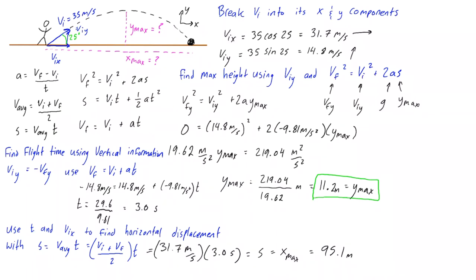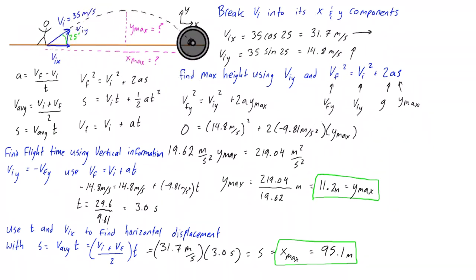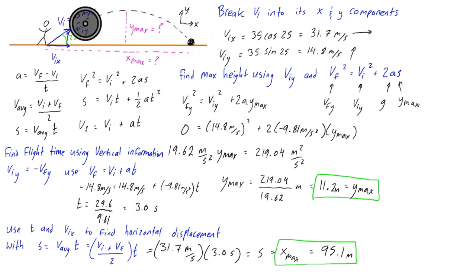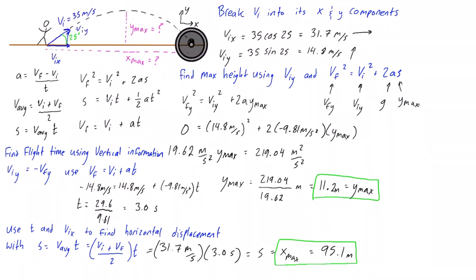To recap: we found the maximum height of the soccer ball, which was 11.2 meters, and the horizontal distance it travels from the kicker before landing, which was 95.1 meters.